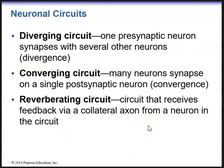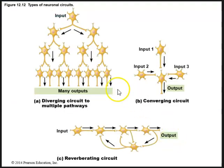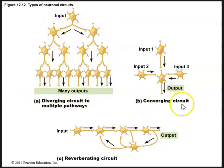With regards to neuronal circuits, we have different types. We have diverging circuits, where one presynaptic neuron synapses with several other neurons. We have converging circuits, where many neurons synapse on a single post-synaptic neuron. And we have a reverberating circuit, which receives feedback via a collateral axon from a neuron in the circuit — one neuron diverges to many outputs, many presynaptic neurons converge on one post-synaptic neuron, or input travels down neurons and a collateral brings the signal back.